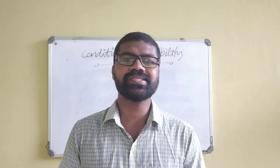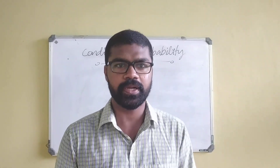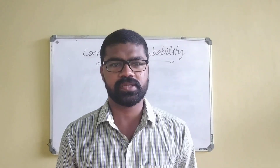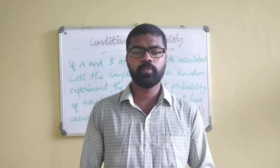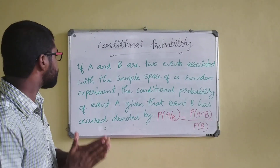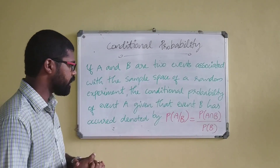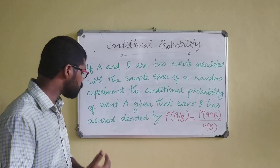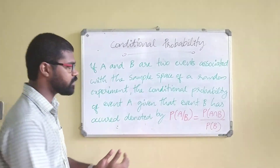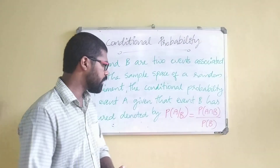Friends, today let us discuss conditional probability. We have already seen normal probability, so it is logic-based probability. By definition, if A and B are two events associated with the sample space of a random experiment, the conditional probability of event A given that event B has occurred, denoted as P(A|B), is read as: probability of A given B equals probability of A intersection B divided by probability of B.